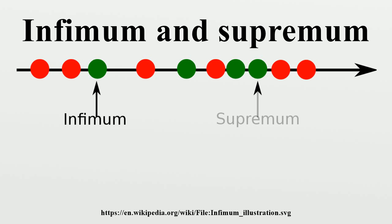If S is a non-empty subset of ℤ and there is some number N such that every element S of S is less than or equal to N, then there is a least upper bound U for S — an integer that is an upper bound for S and is less than or equal to every other upper bound for S. A well-ordered set also has the least upper bound property, and the empty subset has also a least upper bound: the minimum of the whole set.